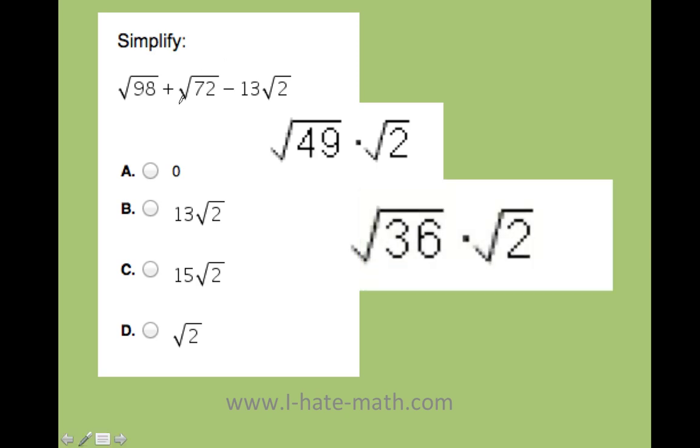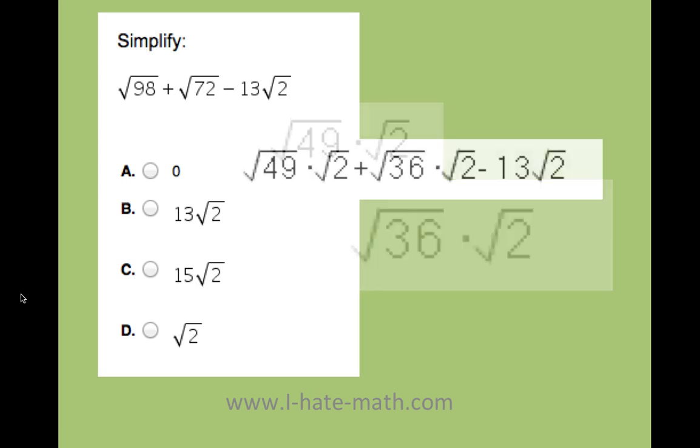Moreover, when I do the same with 72, I see that it is square root of 36 times 2. I'm not doing anything illegal. The only thing I'm doing is just rewriting my expression. So let's see what we have.